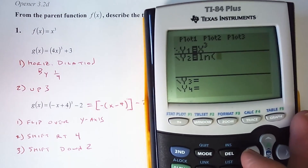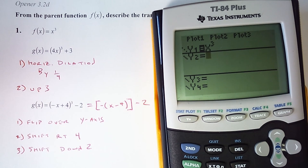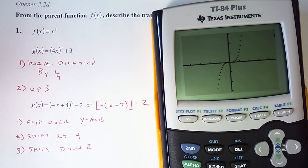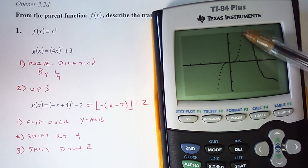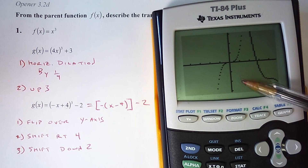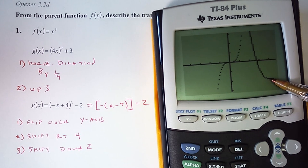Now let's graph that. We have (−x + 4)³ − 2. So now it's backwards — that's the reflection. The reflection happens first; this is the original. The reflection over the y-axis would look like this, and then it shifts 4 to the right and down 2.